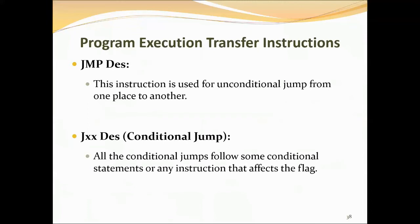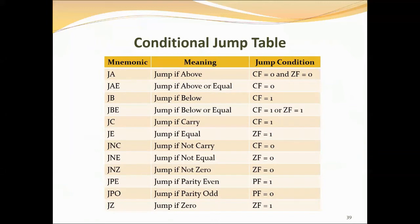Now comes the jump instruction, used for unconditional or conditional jumps. While executing a program, it may be desired to jump execution from one point to another when a certain condition is satisfied — these are conditional jump instructions. Sometimes an unconditional jump is also needed. Jump instructions of the 8086 include: JA, JAE, JB, JBE, JC, JE, JNC, JNE, JNZ, JPE, JPO, and JZ. Each instruction has a specific condition associated with it.